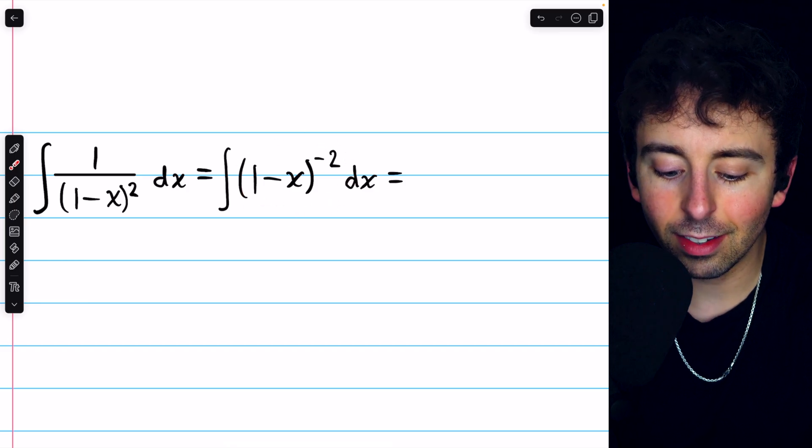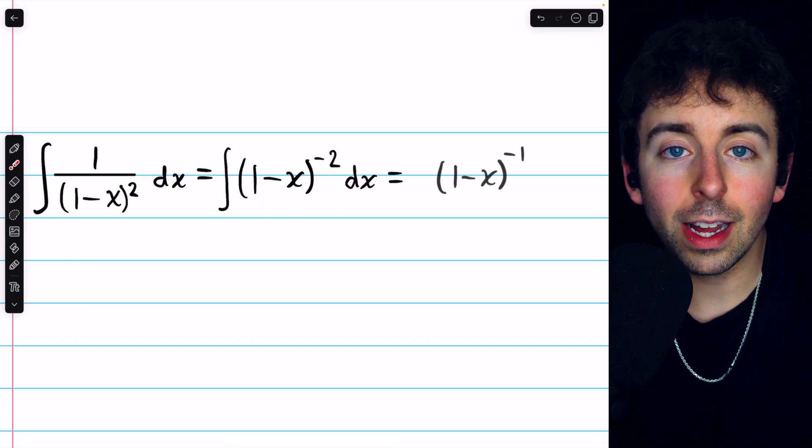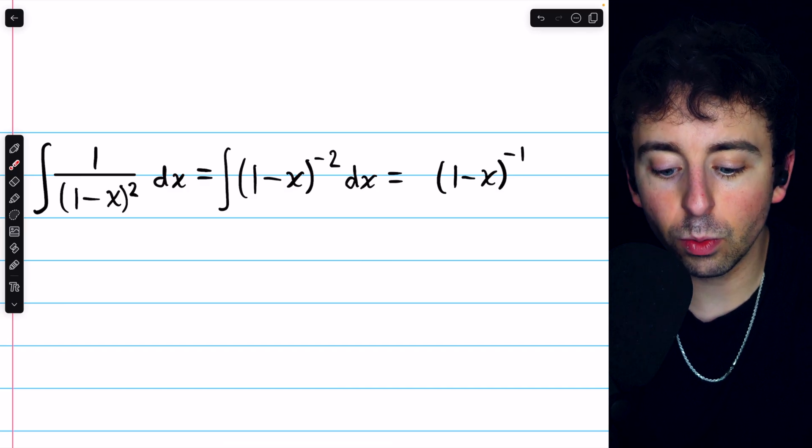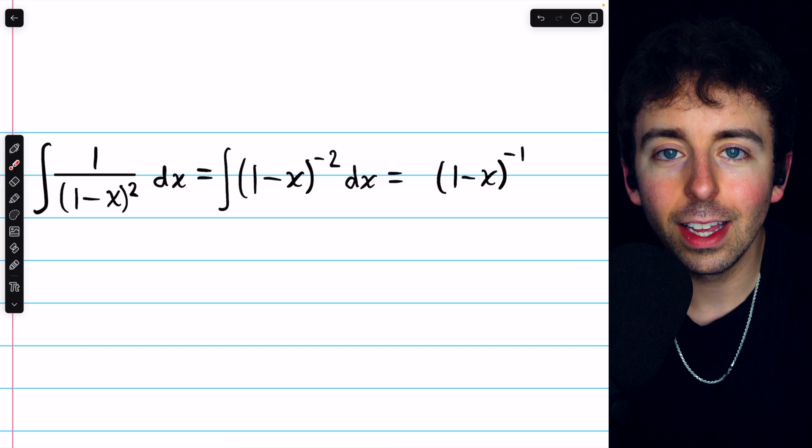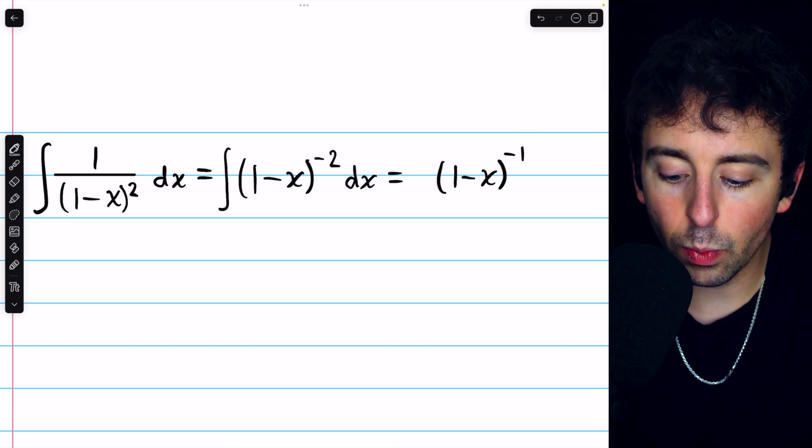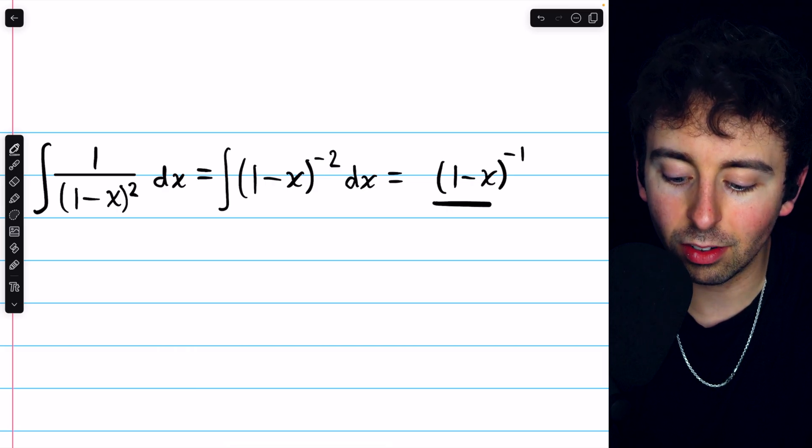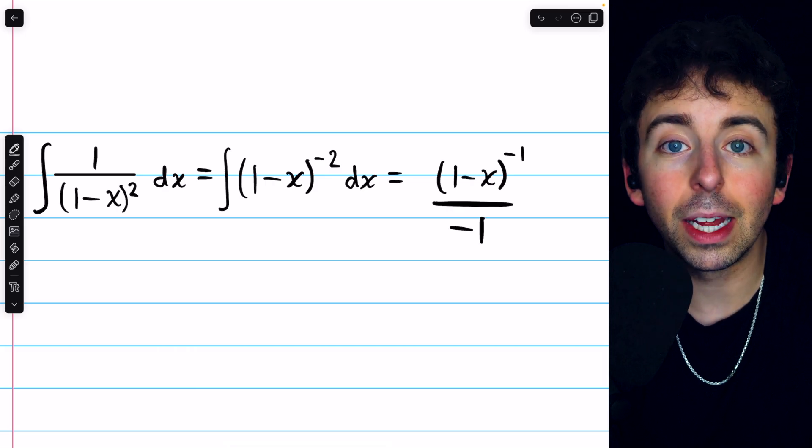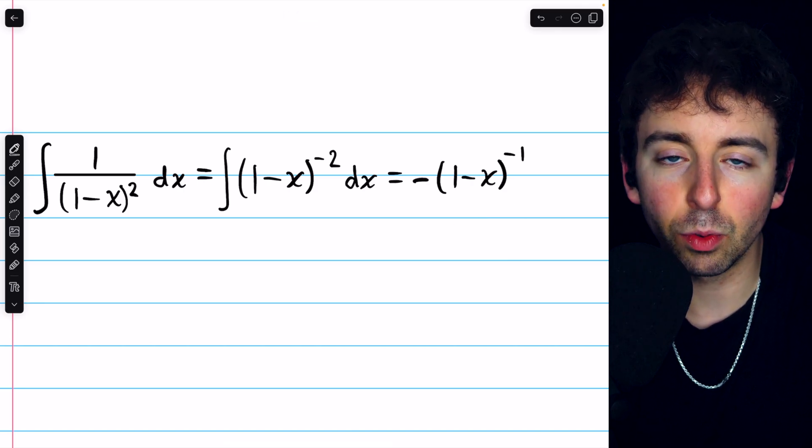And to integrate this, this looks like we could just apply the power rule. Applying the power rule for integrals would tell us that we need to increase the exponent by 1. Negative 2 plus 1 is negative 1. But then we would also need to divide by that new exponent. So we would have to divide by negative 1, which is the same as multiplying by negative 1.